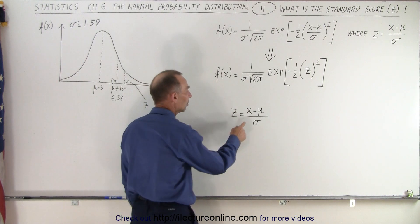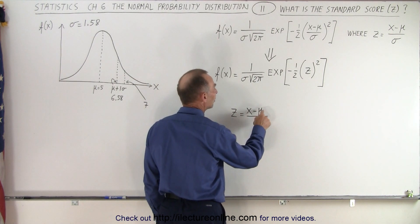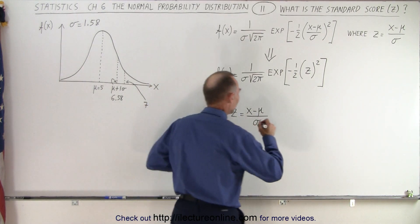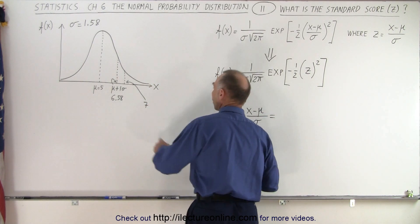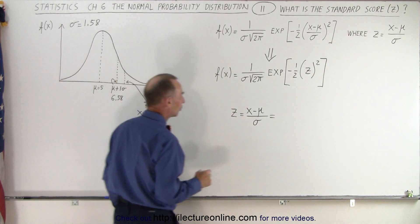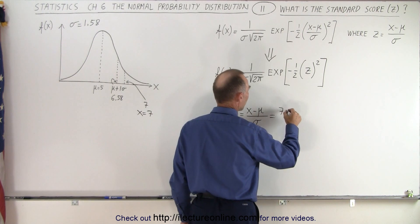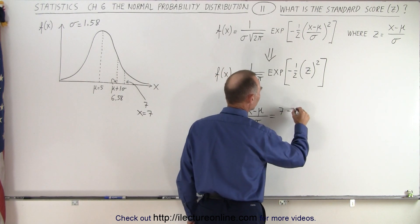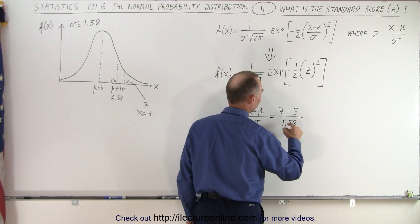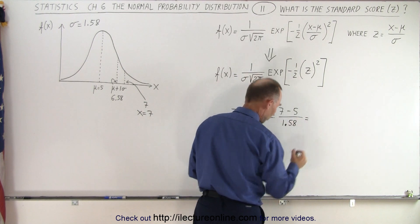So Z is the random variable minus the mean divided by sigma. So let's calculate what it is in this case. This is equal to, in this case, we want X to be 7. X equals 7. So we'll let X equals 7 minus the mean, which is 5, divided by the standard deviation, which is 1.58.